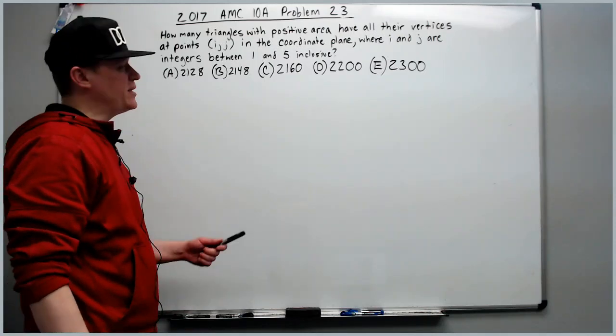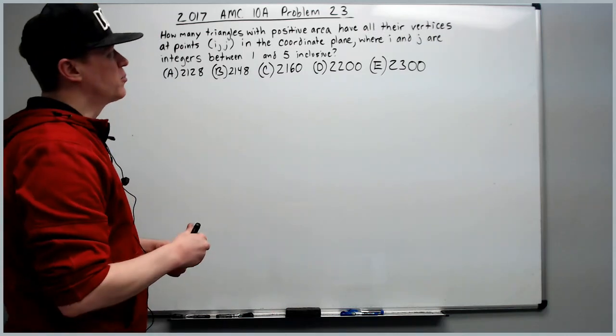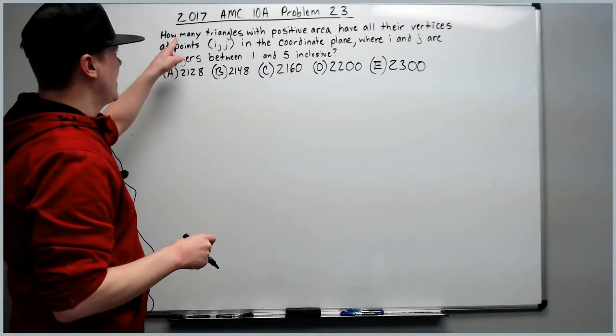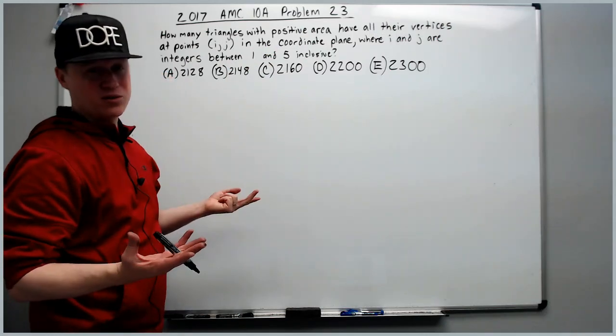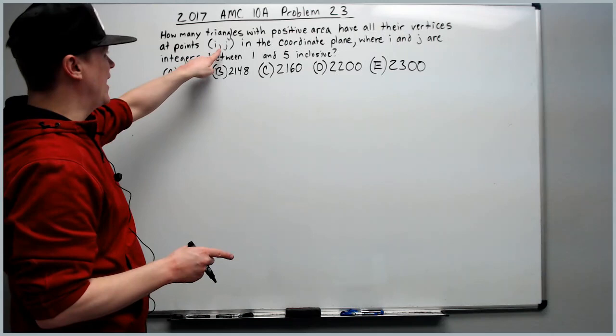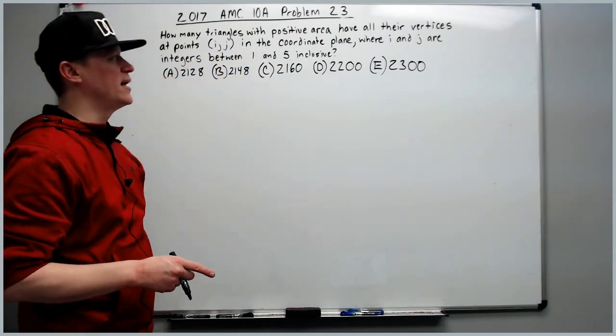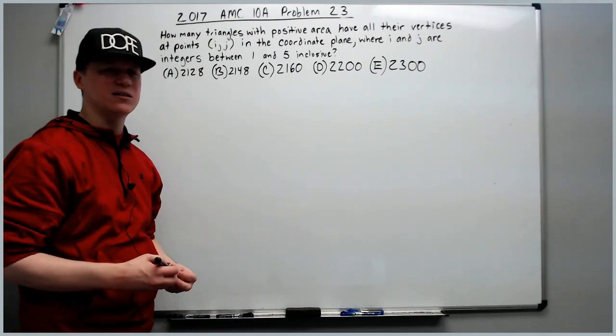Okay, in this problem we'll be doing the 2017 AMC 10A, problem number 23. How many triangles with positive area, in other words normal, have all their vertices at points (i, j) in the coordinate plane where i and j are integers between 1 and 5 inclusive?